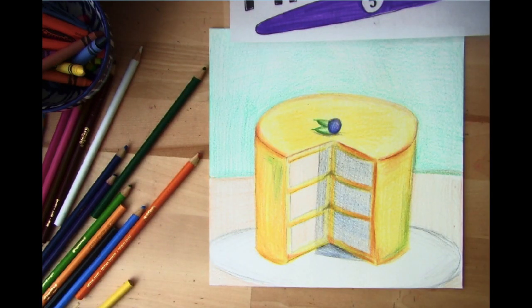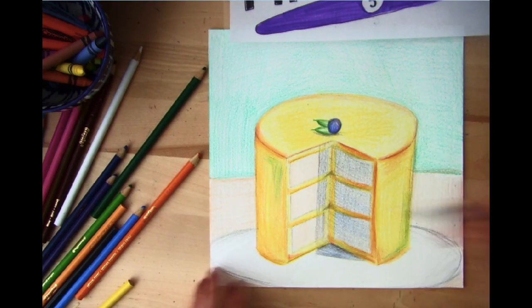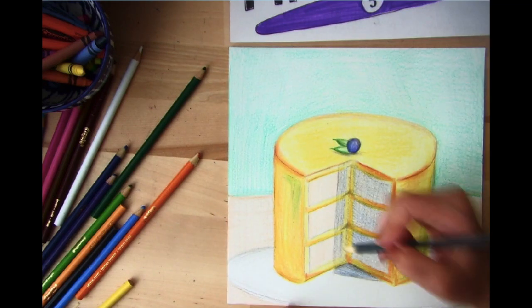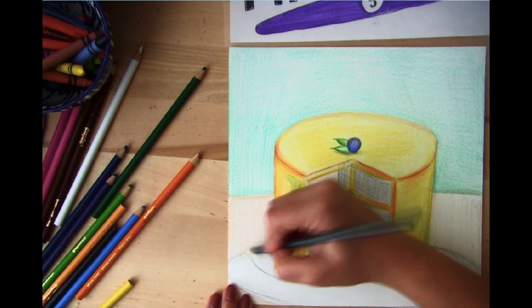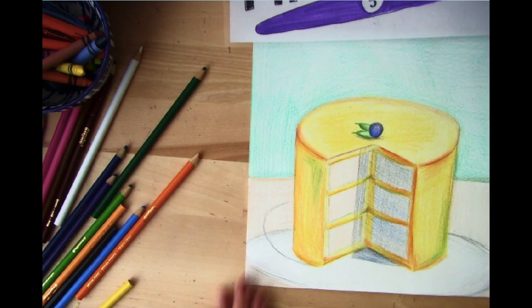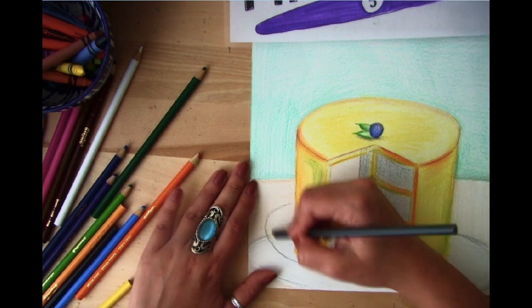So now that everything's colored in, I realize I'm missing one more thing, I'm missing the shadow on this side of my cake. So what I'm going to do for that is start at the edge of my cake and draw a curved edge of my cake. So I'm going to add a curved C that goes up about halfway on my cake and then I want to color that section in.